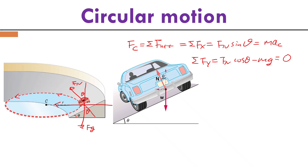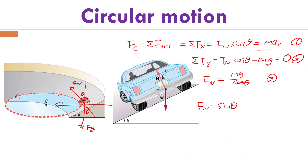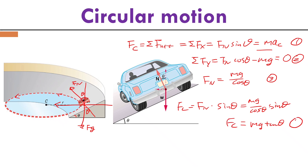From the y-equation, normal force equals mg divided by cosine theta. Substituting into the x-equation, Fn times sine theta equals mg divided by cosine theta times sine theta, giving mg tangent theta. This is my centripetal force — the same result as the previous string example. The normal force here is equivalent to the tension in the string-and-point-mass situation.